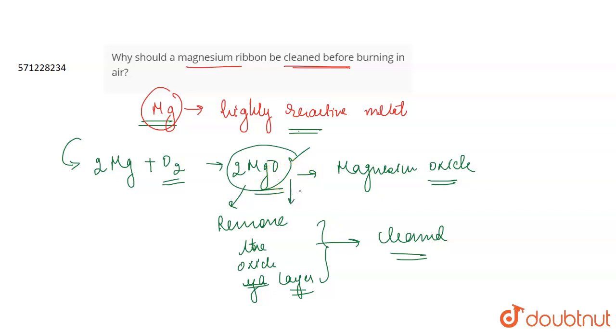We have to clean it and after cleaning, it can burn easily. After cleaning, you can burn the magnesium ribbon easily. The major reason is to remove the layer of magnesium oxide that is formed because of magnesium being a very reactive metal. So, that's all for this question.